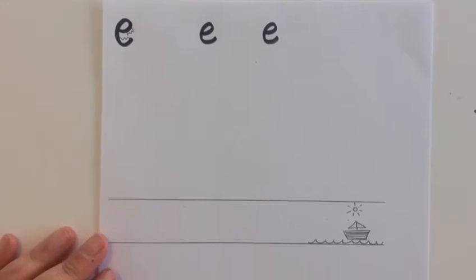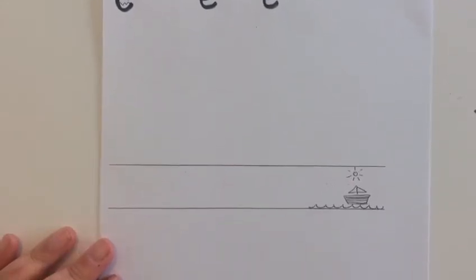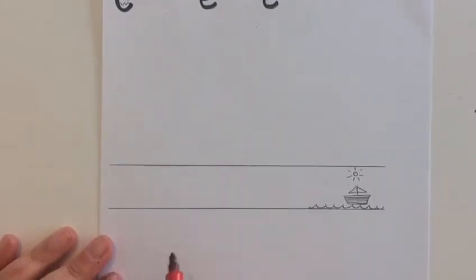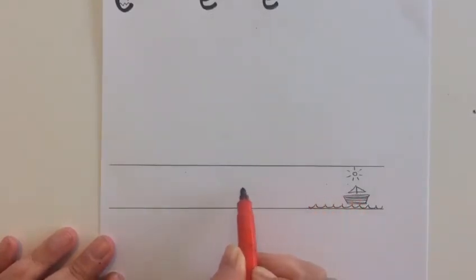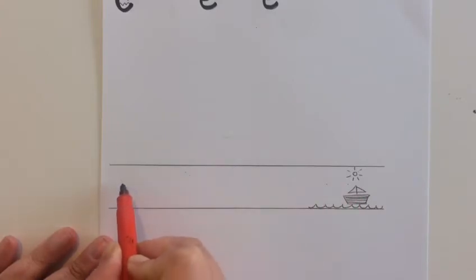Now let's try and write that on the lines. We're going to start in between the top of the boat and the bottom of the boat. Remember where the invisible line is. We're going to start just a bit below that and then come up to meet the invisible line.